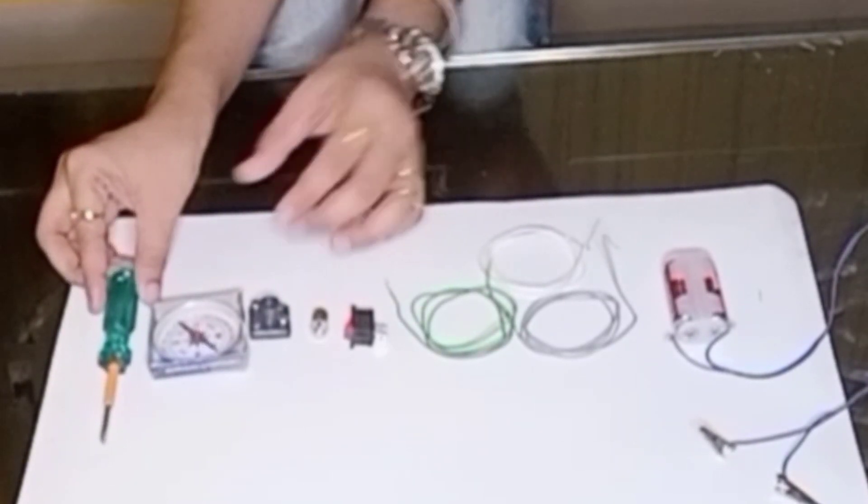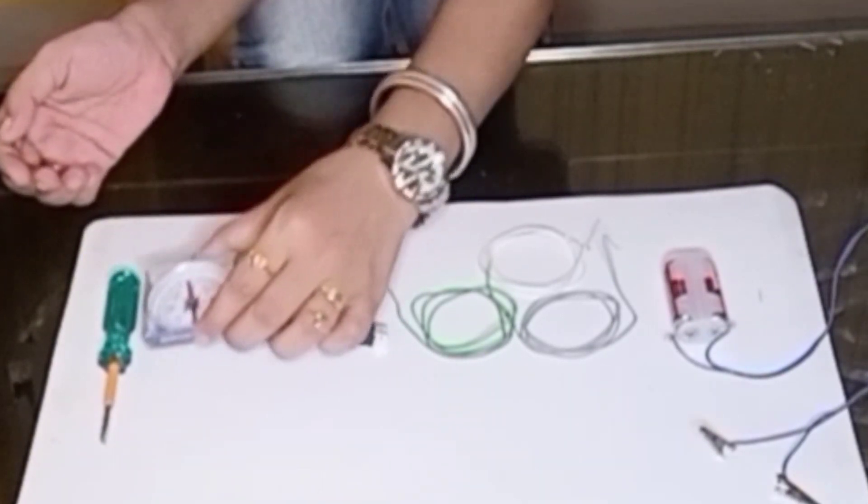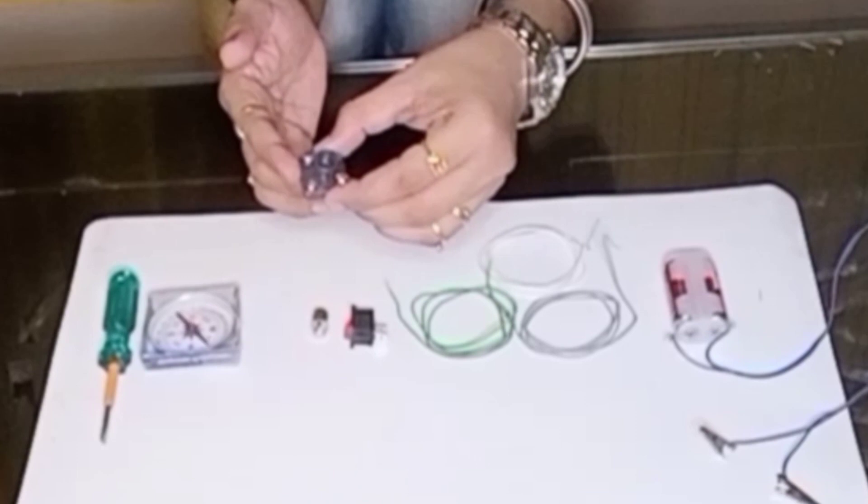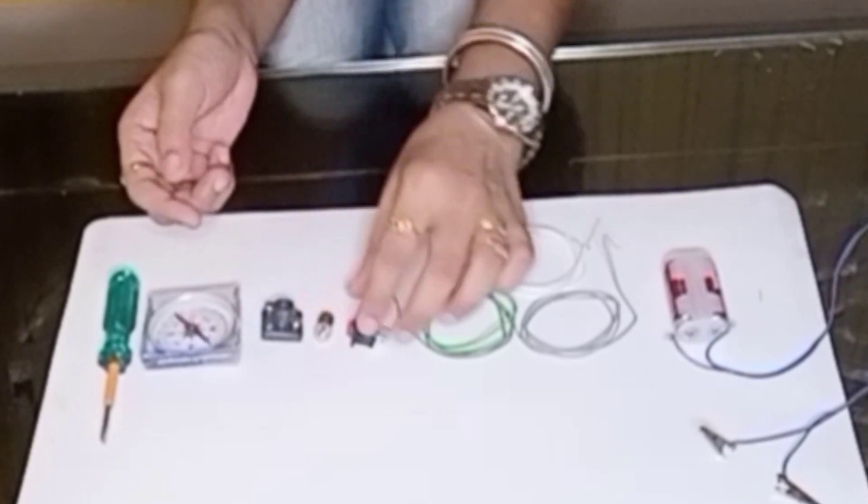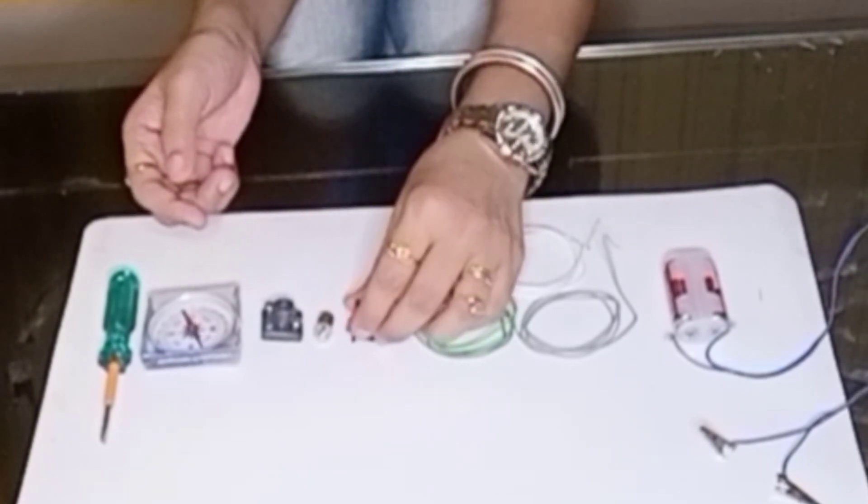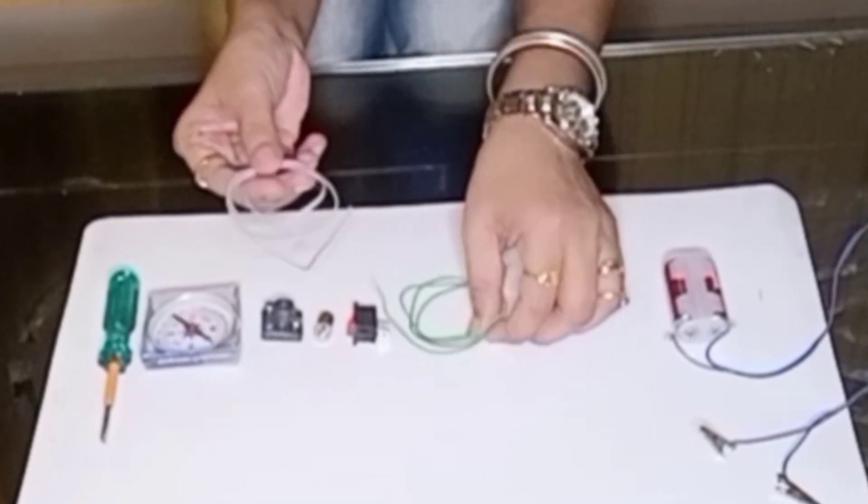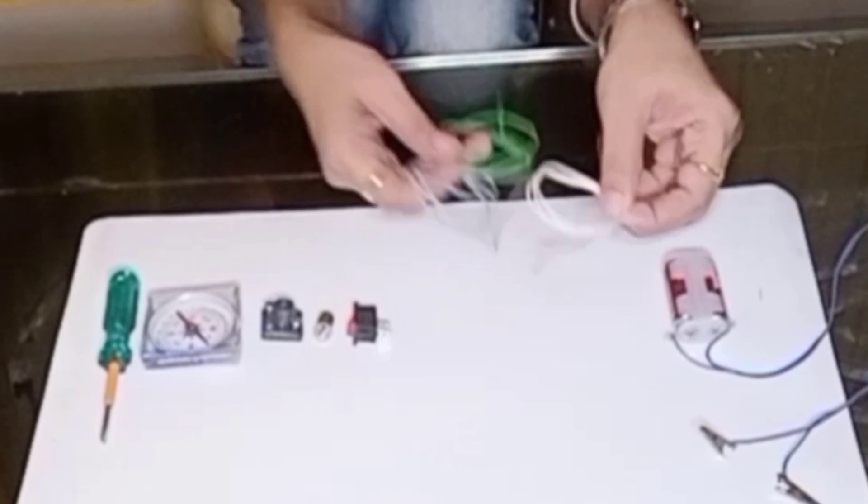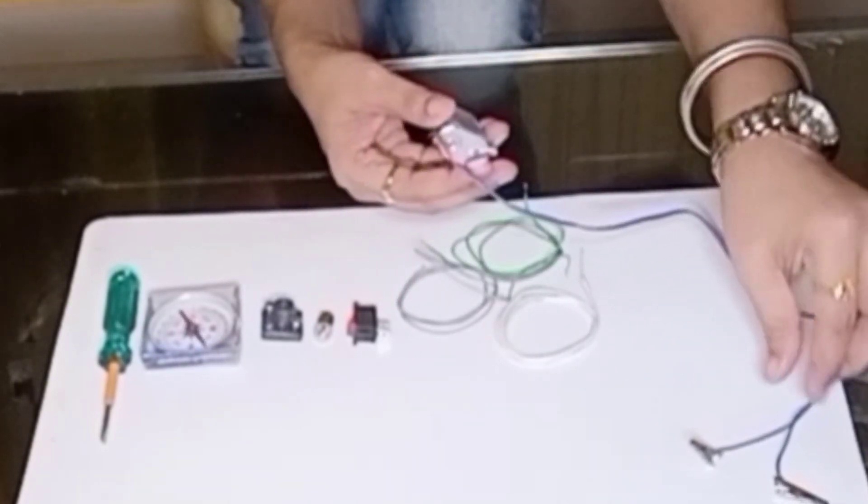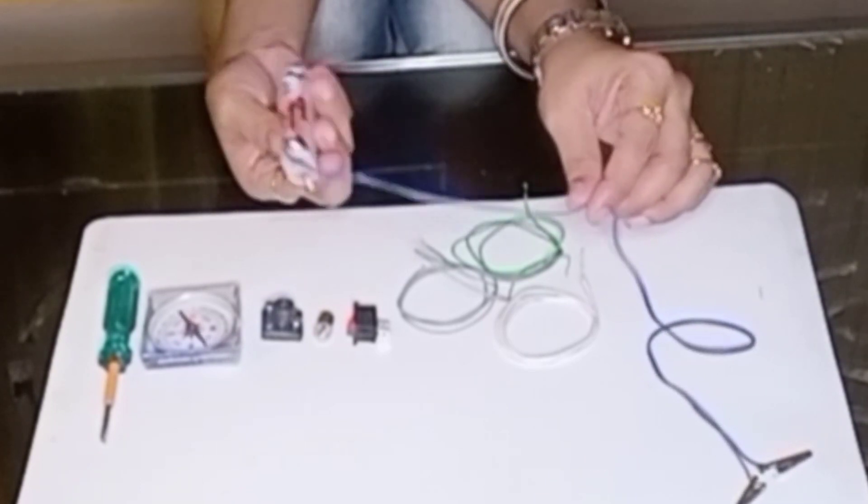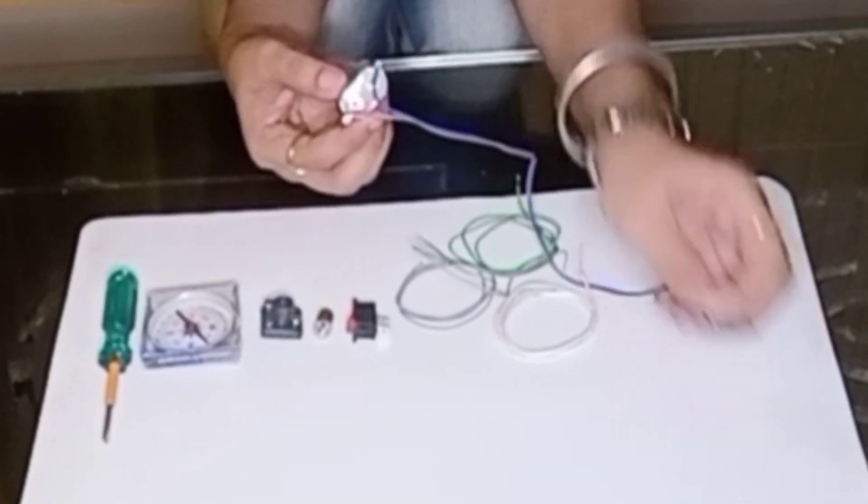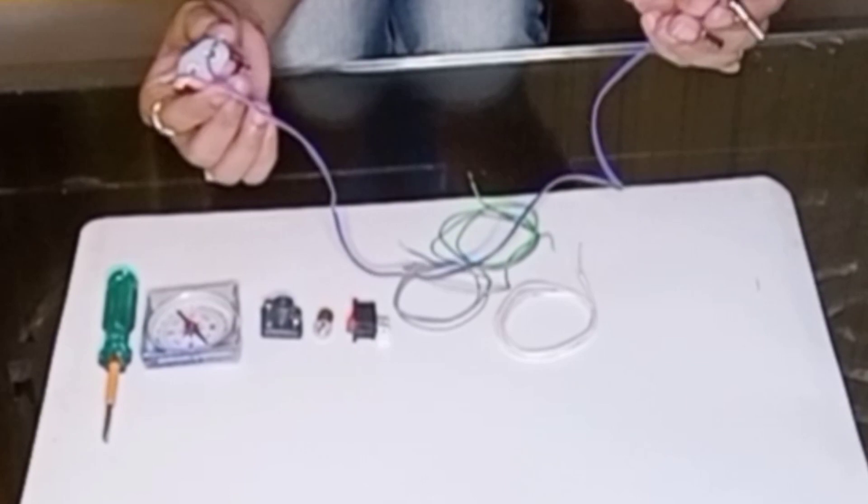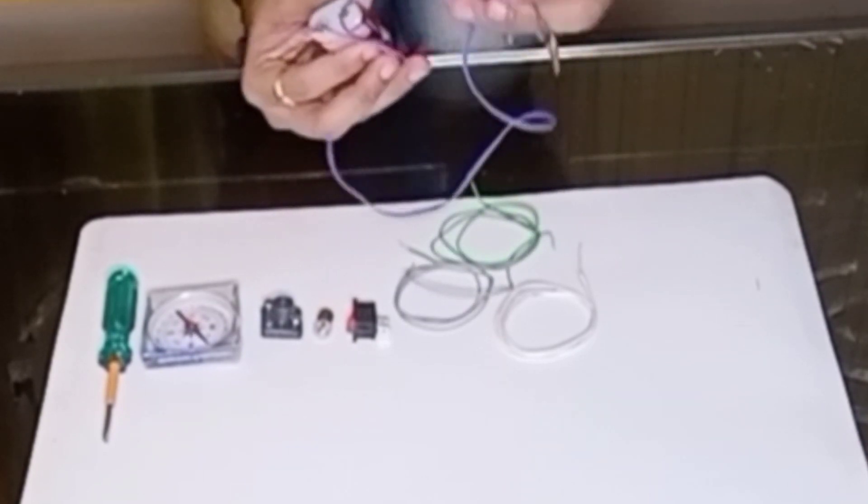The things required are a tester screwdriver, magnetic compass, bulb holder, a tiny bulb, on-off switch, three wires. If you observe, this is batteries along with the battery holder and here you can see two crocodile clips are already attached to it. In my last experiment I had shown how to fix the wires to the batteries.